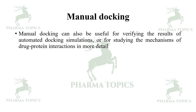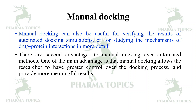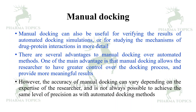Manual docking can also be useful for verifying the results of automated docking simulations or for studying the mechanisms of drug-protein interactions in more detail. One of the main advantages is that manual docking allows the researcher to have greater control over the docking process and provide more meaningful results. However, the accuracy of manual docking can vary depending upon the expertise of the researcher, and it is not always possible to achieve the same level of precision as with automated docking methods.